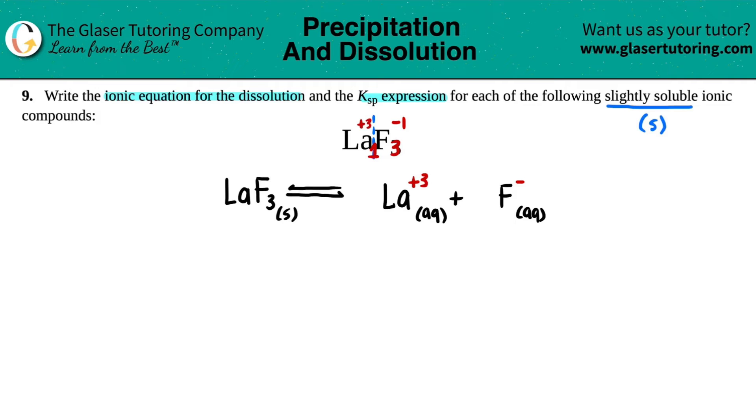We're almost done. We have to make sure that it's balanced. There was one La, so there's one La here. But there's three fluorines. So I have to come over here and say that I have three F minuses. And now this is the proper balanced ionic equation.